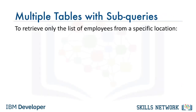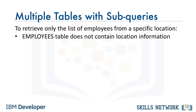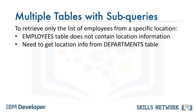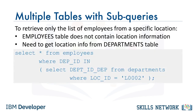Let's say we want to retrieve only the list of employees from a specific location. We do not have any location information in the employees table, but the departments table has a column called location ID. Therefore, we can use a subquery from the departments table as input to the employee table query as follows: SELECT * FROM employees WHERE department_ID IN (SELECT department_ID FROM departments WHERE location_ID = 'L0002').